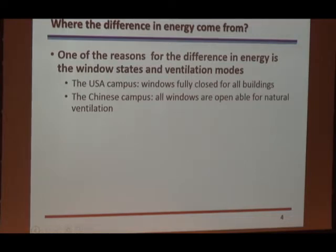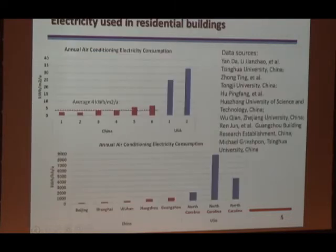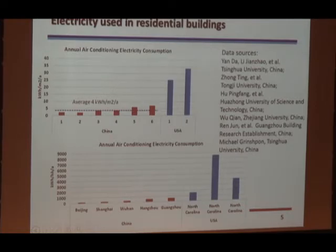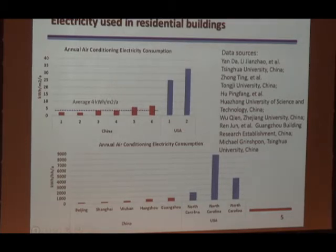Fully closing the windows and doing everything by mechanical ventilation, or openable windows for natural ventilation — I think this can make a big difference. Looking at some residential buildings, the electricity used in ventilation and cooling: here is some Chinese families, and here is some families in the United States — in terms of per square meters annually, or per household — you can see a big difference: three, four, six times.